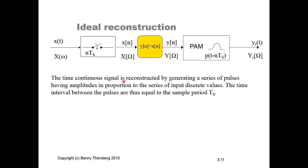The time-continuous signal is reconstructed by generating a series of pulses having amplitudes proportional to the series of input discrete values. At any time, the actual pulse amplitude is proportional to the number feeding into the pulse modulator. The time interval between pulses is equal to the sample period TS, the same sample period used for the sampler.